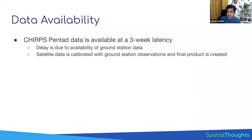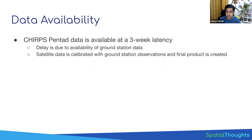CHIRPS is not available in real time — it has about three weeks of latency. The reason is that it combines satellite measurements, which are available quickly, with station data that must be recorded, finalized, and submitted before the dataset is finalized. This three-week delay is still acceptable for drought monitoring. Once you build the script, you can run it and see what the situation was like three weeks back, giving you an early indicator of drought.